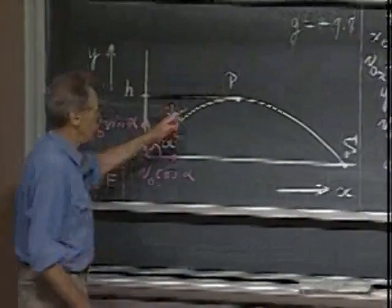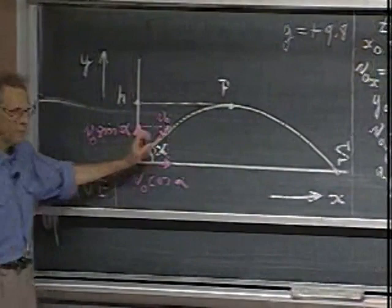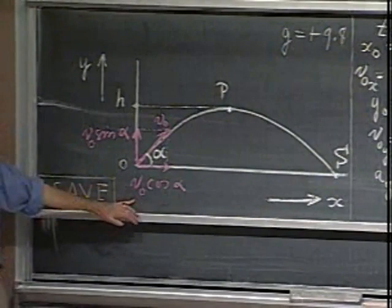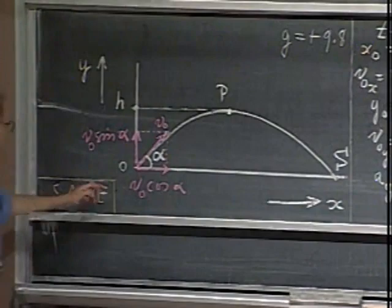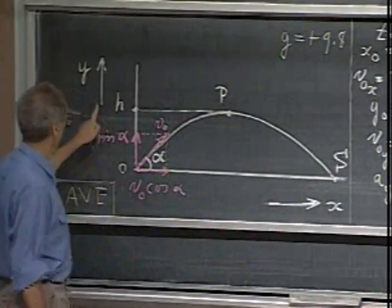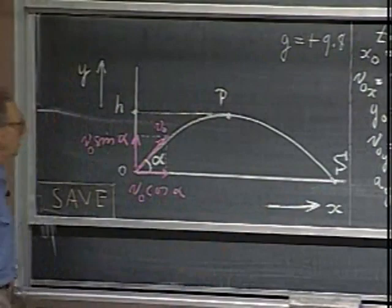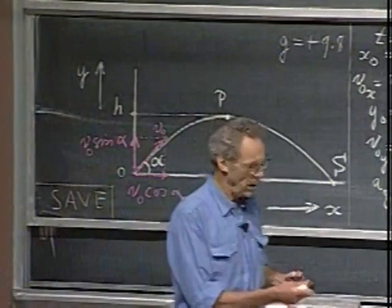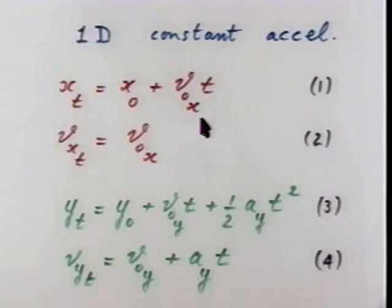We have here a trajectory of a golf ball or a tennis ball. We shoot it up at an angle alpha. The horizontal component in the x-direction is V0 cosine alpha, and the vertical component is V0 sine alpha. It reaches the highest point at P, and it returns to the ground at point S. We're going to use very heavily the one-dimensional equations in x, where there is no acceleration, and in y, where there is acceleration.